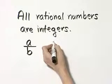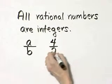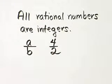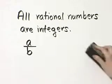So for example, it is true that some rational numbers are integers. For example, 4 over 2. That is a rational number. It's also an integer because it simplifies to an integer, which would be 2. But are all rational numbers integers?